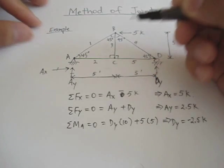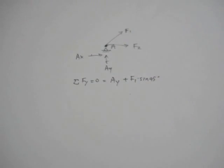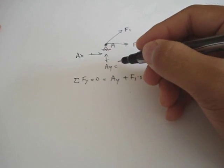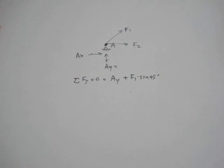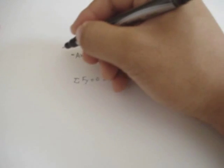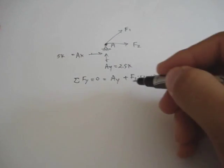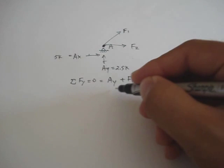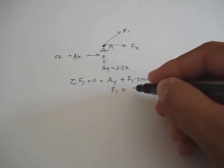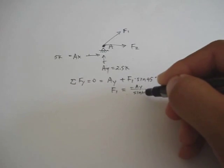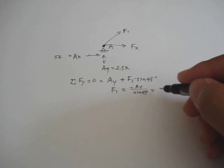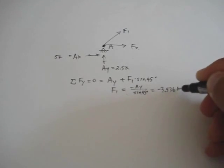Okay. I'm back to joint A. Now, we know Ay is, from earlier, Ay is 2.5 kips. Ax is 5 kips. Okay. Solve this equation for F1. And then, you get F1 is equal to minus Ay all over sine of 45 degrees. Which turns out to be minus 3.536 kips.